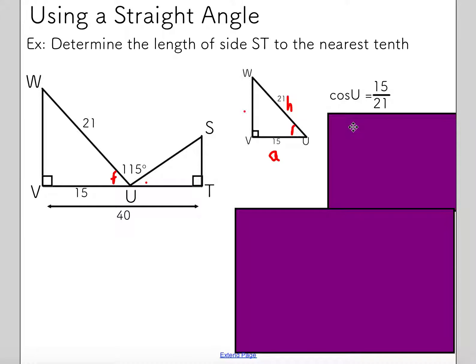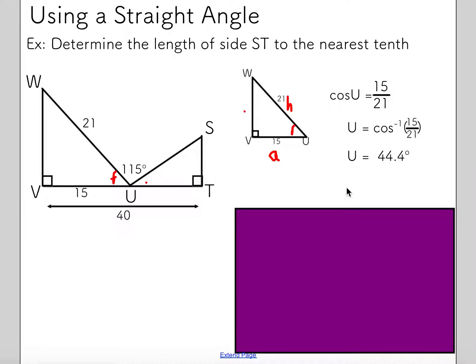In order to solve for my angle U, I've got to take the cos inverse of both sides. I'm going to take the cos inverse. Punching that into my calculator in degree mode gives me 44.4 degrees. So I now know this angle is 44.4 degrees.